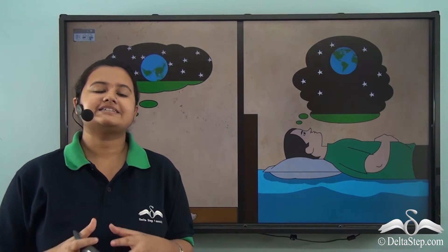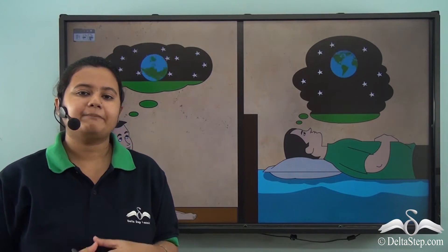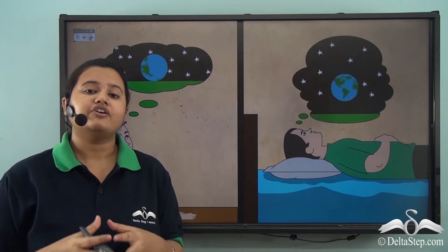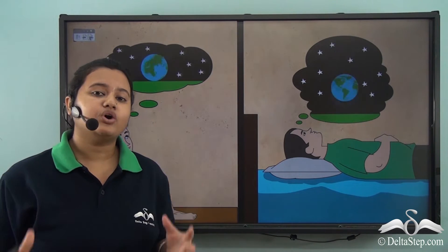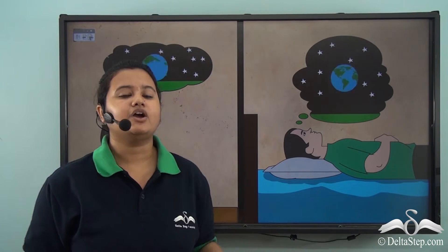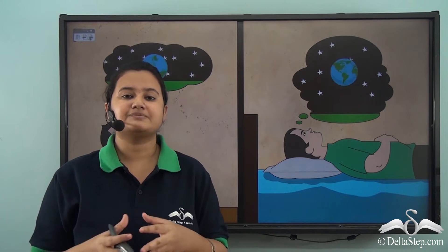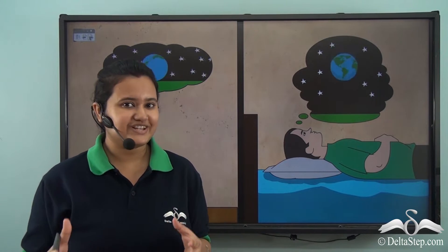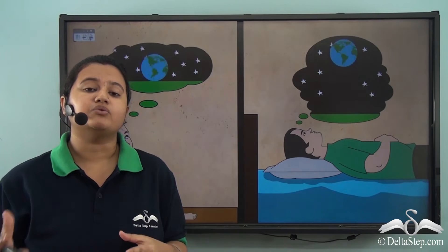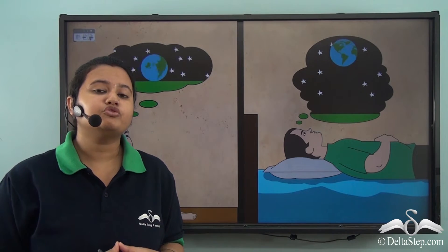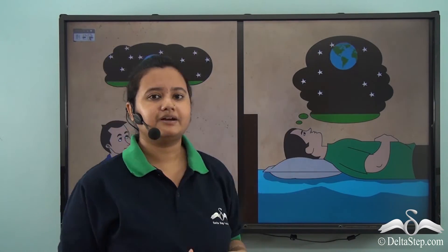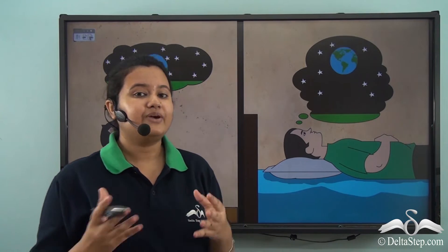All these things happen because our Earth is not a stationary body — rather, it is always moving. Even when you are sitting or lying on your bed, the Earth is moving. Interesting, isn't it? When I talk of this movement, what type of movement is it? Does the Earth roll over or bounce like a ball? Well, let us see.